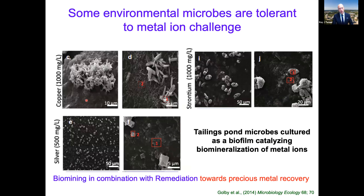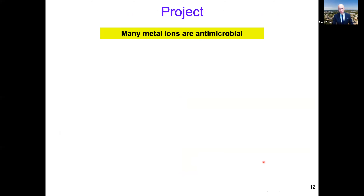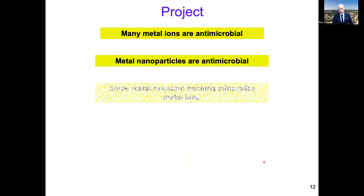In my group, we were actually studying bacteria for metal bioremediation — to clean up heavy metal pollution. We found that some metal-resistant bacteria working as a community could crystallize metals out of solution. Here's an example of copper back-crystals coming right out of the bacteria, silver crystals being produced, and strontium crystals being produced. We were originally thinking about this in terms of precious metal recovery.